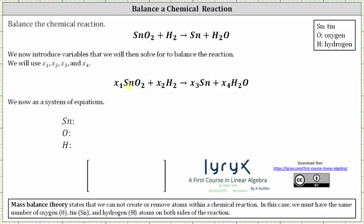On the left, because we have one atom of tin, on the right we also have one atom of tin. The coefficients must be equal, meaning x sub one must equal x sub three. Moving on to oxygen, notice how on the left we have two atoms of oxygen, on the right we only have one. And therefore, two times x sub one must equal one times x sub four, or two x sub one must equal x sub four.